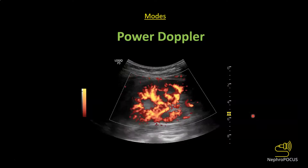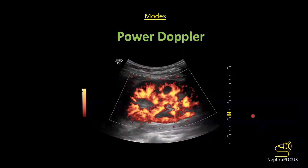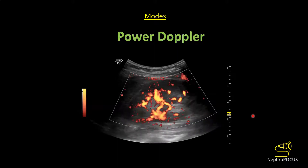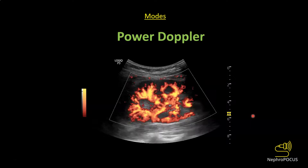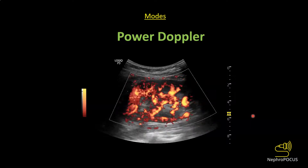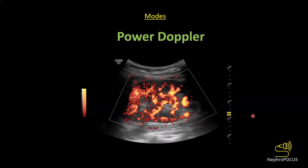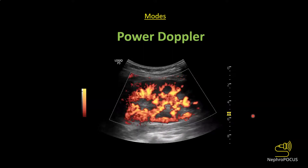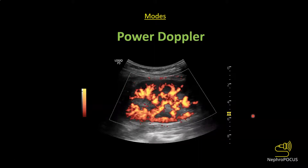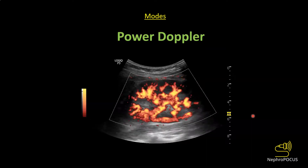Power Doppler is similar to color Doppler in that it represents flow and detects whether blood flow is present. However, instead of using frequency information it uses the intensity of the returning signal, and unlike color Doppler it does not indicate the direction of flow — there is no red and blue, just one color of varying intensity. The advantage is that it can detect low-flow states, such as when draining an abscess or when color Doppler pickup of kidney flow is poor.